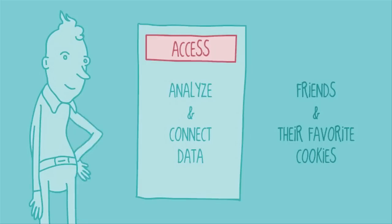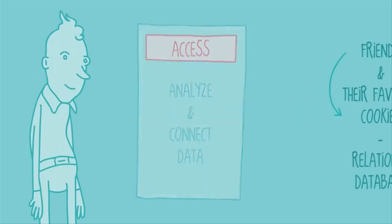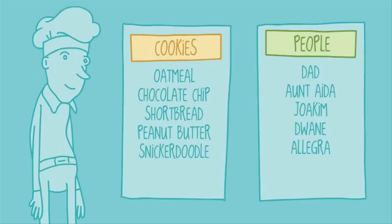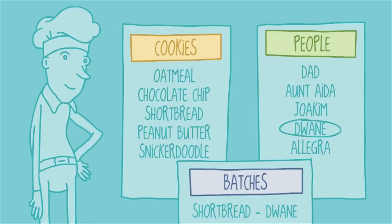The databases you'll be working with in Access can actually understand how different lists and their contents relate to one another. We call this a relational database, for its ability to understand relationships, and it's really what sets Access apart. Let's think about what that means while we go back to our amateur baker's database, and build a third list to keep track of batches of cookies and who they're for. It's easy to see the relationship here — all I did was pull Duane from this list, and shortbread from here. Access can see and use that relationship too, but Excel can't.